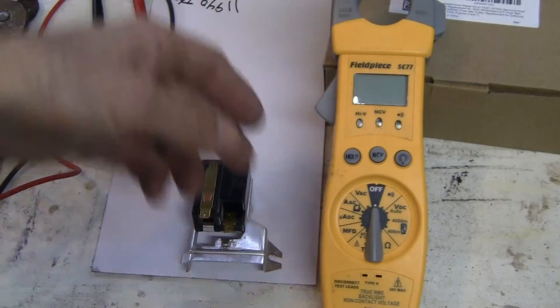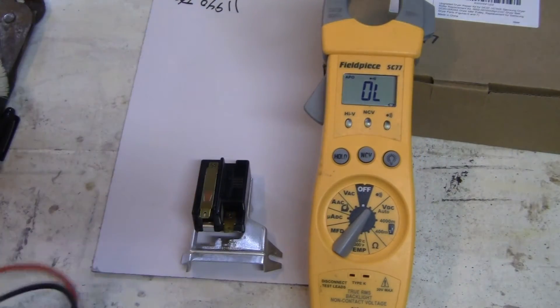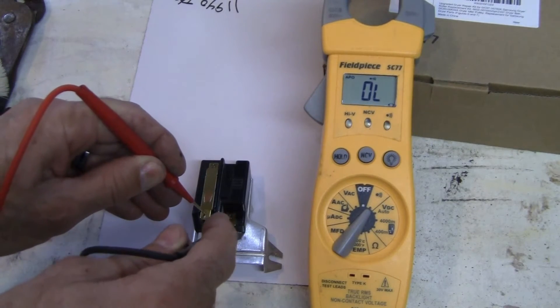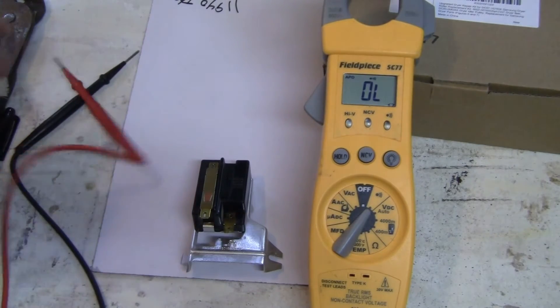We're going to take our continuity tester, put it on continuity, and we should have a closed switch on our flame sensor, and indeed we do. So that's it, that's all there is to testing the flame sensor.